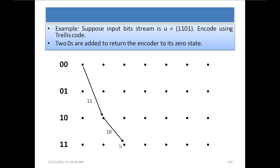Now the current state of our registers is 11 and the next input bit is 0. When it is 0, if we are at state 11, then the next state will be 01 and output will be 10 — this dashed line is showing that the input is 0. Then the next input bit is 1. From this state, if the input bit is 1, then the next state will be 10 and output will be 00.